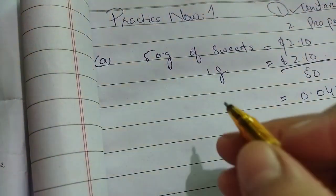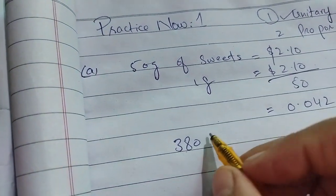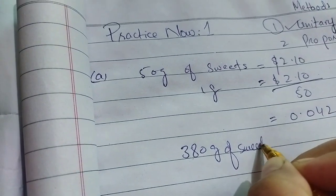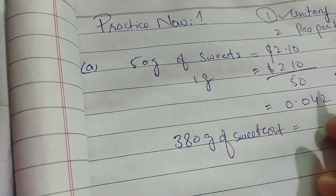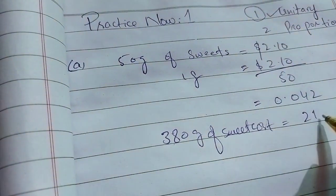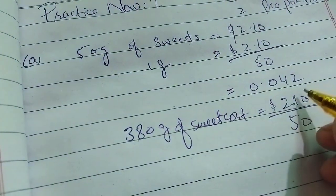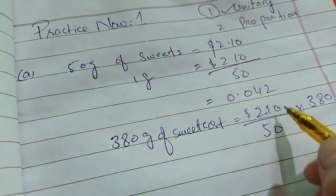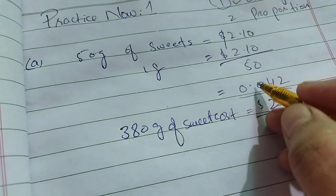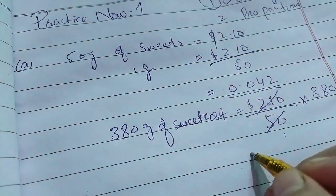Now since we have the unit price, we will find the cost of 380 grams. For 380 grams of sweets, we take the unit price 0.042 and multiply it by 380. You have to keep this unit price and multiply it directly, then write the answer below.